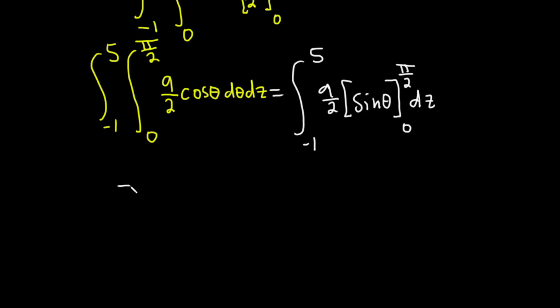So this is equal to negative 1 to 5, 9 halves. We plug in pi over 2, so we get the sine of pi over 2 minus the sine of 0. And then we still have the dz.